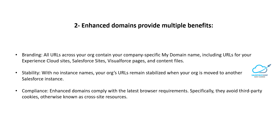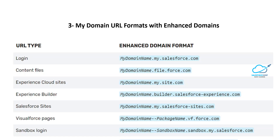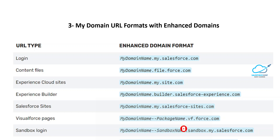Now let me show you the My Domain URL formats with enhanced domains. If you enable enhanced domains in your org, you will see a different URL in the browser. For example, the login URL: for sandboxes it's test.salesforce.com, and for production it's login.salesforce.com. After enabling enhanced domains, the login URL becomes: mydomainname.my.salesforce.com.